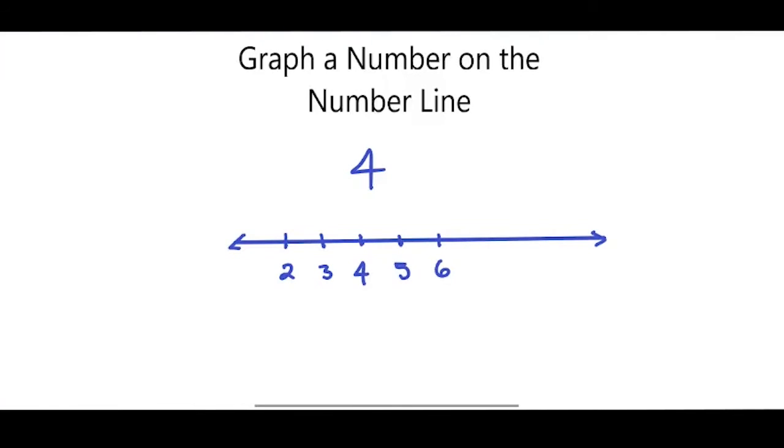I'm going to put arrows on either end to show that it goes on forever. And right over the 4, I'm going to color in a nice dark dot. And that's how you graph 4 on the number line.